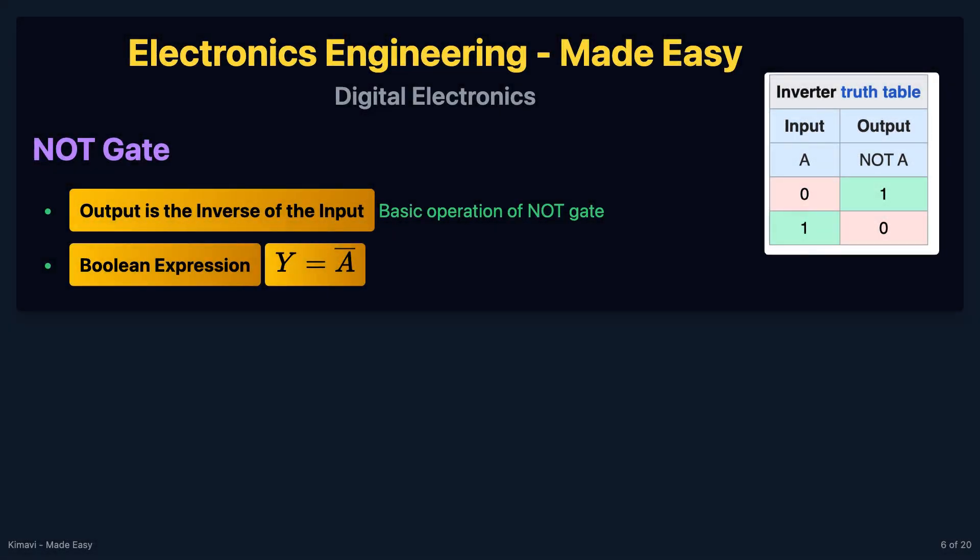The NOT gate outputs the inverse of the input. The boolean expression for a NOT gate is y = ā, where the overline represents the NOT operation.